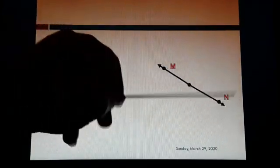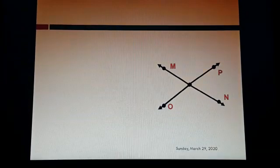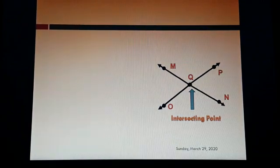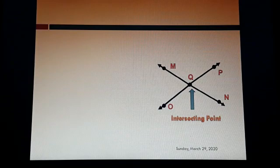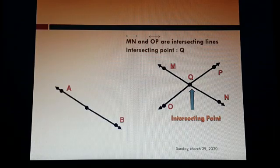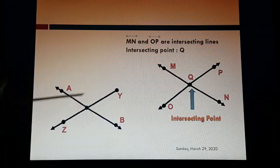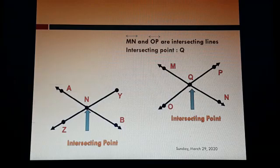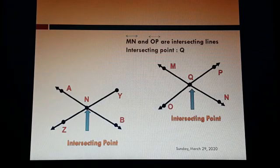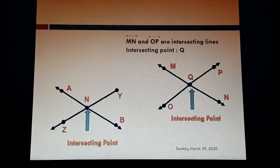Line MN is intersected by line OP at point Q. So Q is the intersecting point and both the lines are intersecting each other. Also, line AB is intersected by ray YZ at point N. So N is the intersecting point — both are intersecting lines.